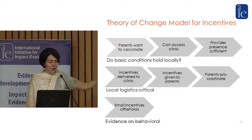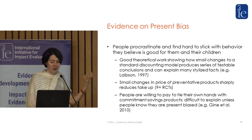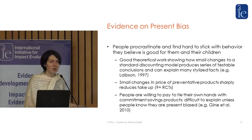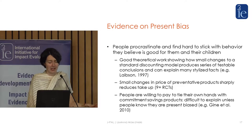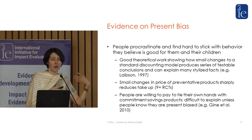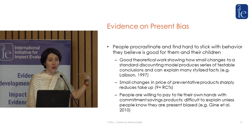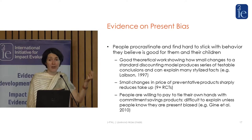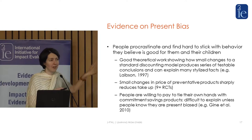The next step in the theory of change was about behavior — the underlying general question of do parents procrastinate and can procrastination be offset by small incentives? We've got a ton of evidence on that. We only have one RCT on immunization incentives, but there's tons of evidence on the underlying theory. Lots of people have tested this on HIV and many other areas. We also have a lot of evidence on small price changes deterring take-up — that's all driven by the same theory that people procrastinate and don't invest in preventative health. These are very different studies, but they all support the underlying theory.